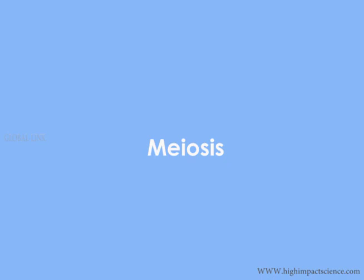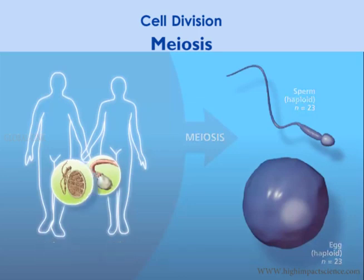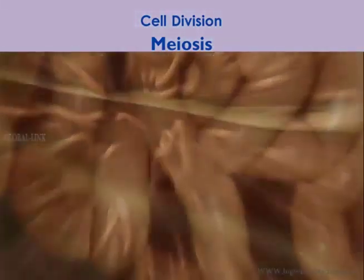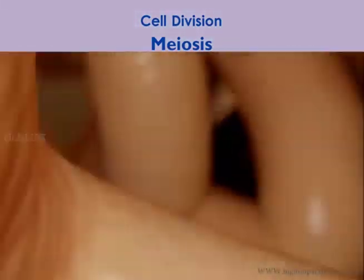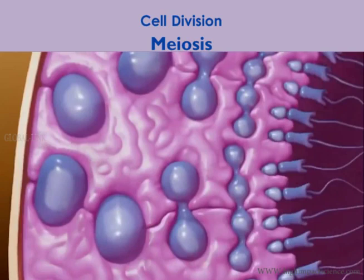Next is meiosis. Meiosis is a type of cell division in which haploid cells are produced from a diploid cell. It occurs in special cells called germ cells within the gonads of males and females, and generates the male and female gametes for reproduction.